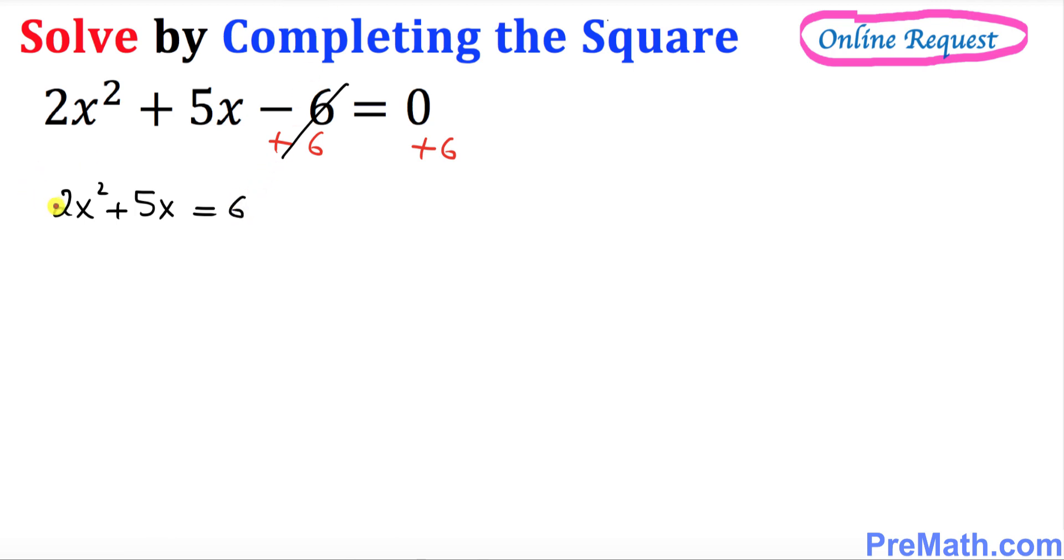The next step: we must have 1 as a leading coefficient. As you can see here it is 2. How can we make it 1? By simply dividing by 2. If you divide this one by 2, you must divide across the board, each and every term is divided by 2.